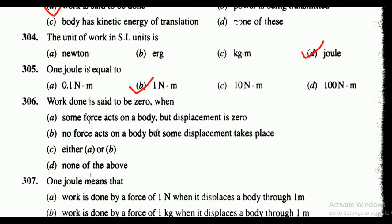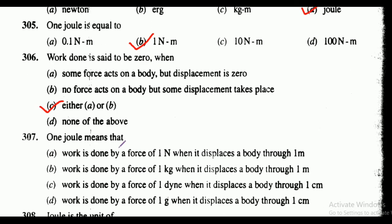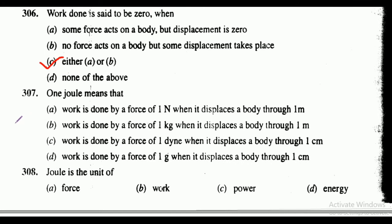Question 306: work done is said to be zero when — some force acts on a body but displacement is zero, no force acts but some displacement takes place, either A or B, or none of the above. The correct answer is option C, either A or B.